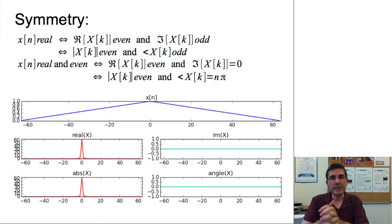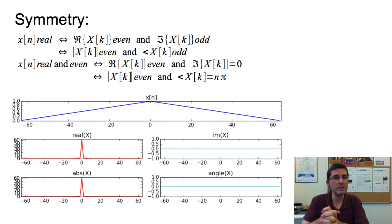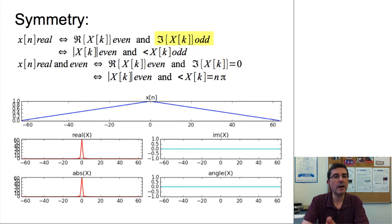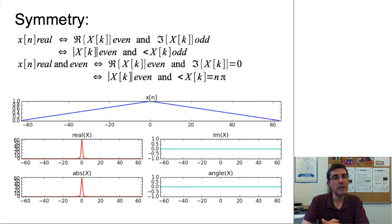Now let's talk about symmetry. In the DFT we have a whole bunch of symmetries, and they will be very useful for many operations. For example, if we start with a real signal — the type of signal we will be dealing with — then the real part of the complex spectrum will have even symmetry, and the imaginary part will have odd symmetry. Looking at the polar representation, the magnitude spectrum has even symmetry, and the phase spectrum has odd symmetry.